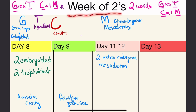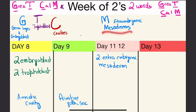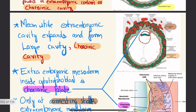The second week is also called the 'week of twos.' Remember the word GTCM: G for germ layer from embryoblast, T for trophoblast that divides into two layers, C for cavities — two cavities are formed, and M for extra embryonic mesoderm. So two germ layers are hypoblast and epiblast, two trophoblast layers are syncytiotrophoblast and cytotrophoblast, two cavities are embryonic cavity and primitive yolk sac, and extra embryonic mesoderms are splanchnic and somatic mesoderm.